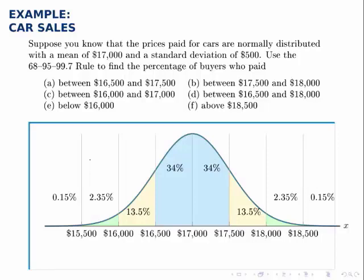Using the picture, part A: what percentage of buyers paid between $16,500 and $17,500? Adding up the blocks in that range gives 68%. Part B: between $17,500 and $18,000 — just one region with 13.5%. Part C: between $16,000 and $17,000 — two blocks adding to 47.5%. Part D: between $16,500 and $18,000 — three blocks adding to 81.5%. Part E: what percentage paid below $16,000? — 2.35% plus 0.15% gives 2.5%. The final part: what percentage paid above $18,500? — there's only one block up there, so 0.15% of buyers paid above that amount.